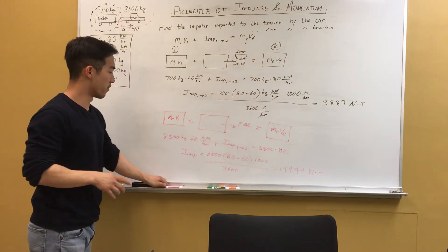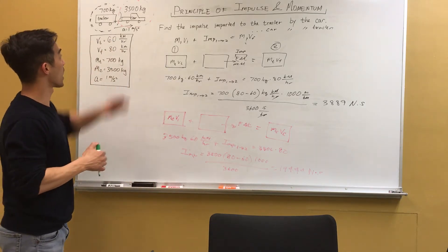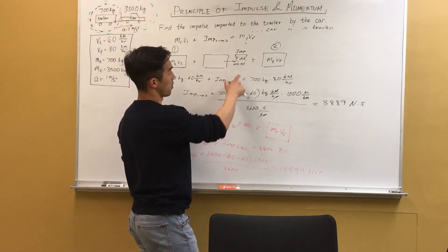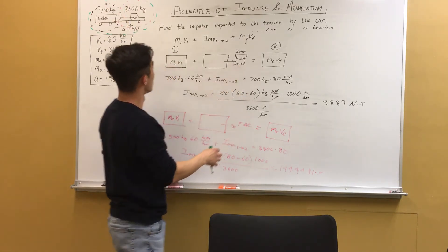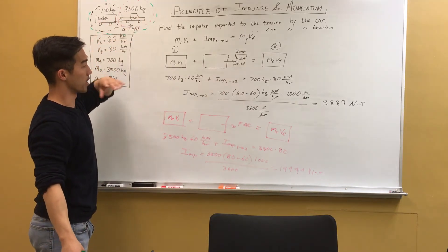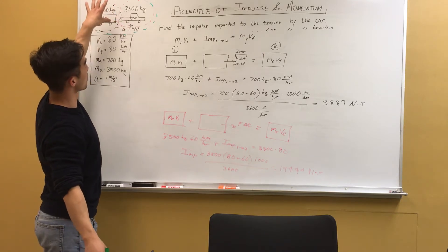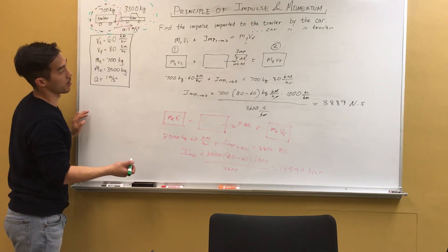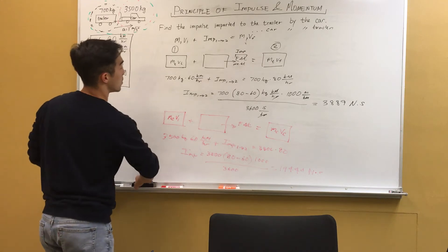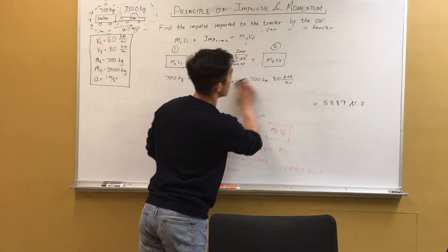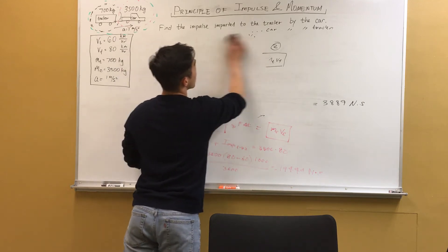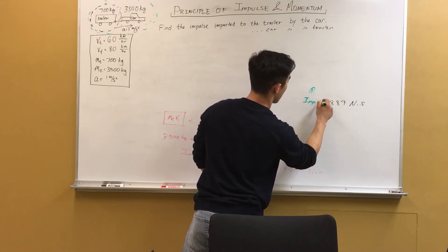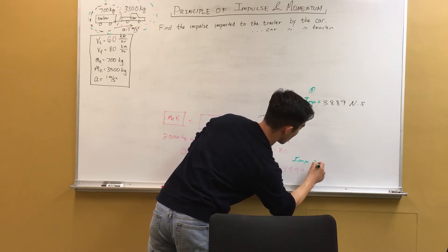So if we wanted to find the impulse of the entire system, we could sum up all of the impulses found for each of the systems that we analyze individually. And that should equal if we had actually analyzed the entire system as a whole initially. So how would that change our equation? So this was impulse for the first scenario. This was impulse for the second scenario.